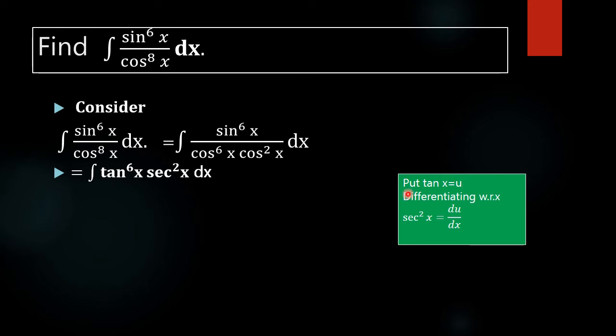For that, put tan x equal to u. Now differentiating it with respect to x, we would get d by dx of tan x is sec square x, and d by dx of u is du by dx.